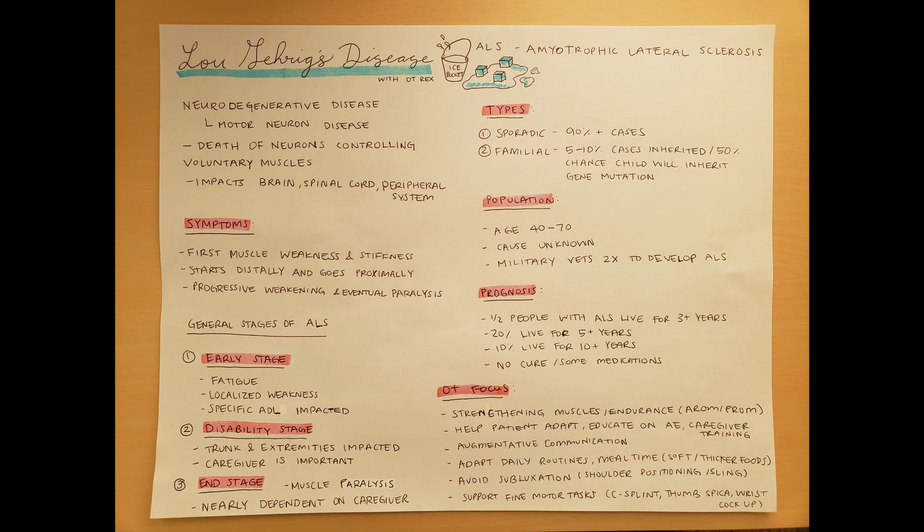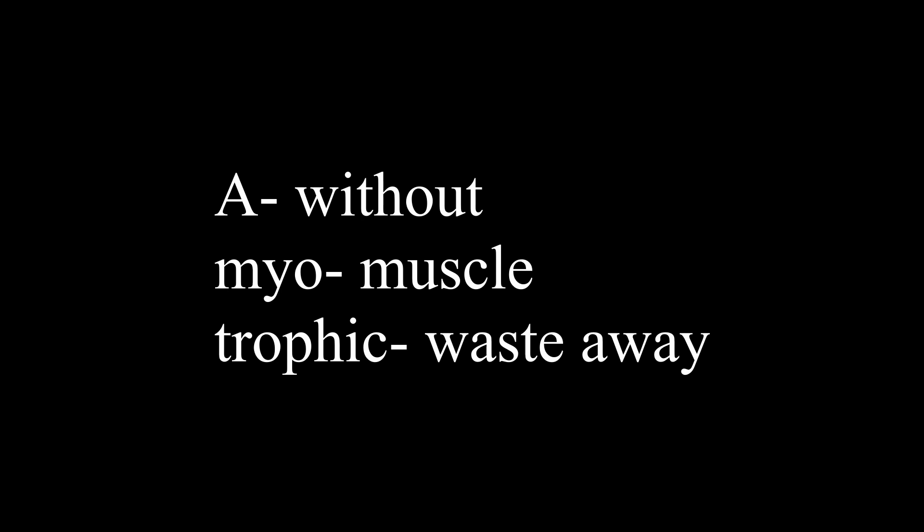Lou Gehrig's disease has multiple names, and one of the other names it's commonly known by is amyotrophic lateral sclerosis, abbreviated as ALS. Let's break down what amyotrophic lateral sclerosis means. Going back to medical terminology: 'A' means without or none, 'myo' refers to muscle, and 'trophic' — think of atrophy — means no muscle nourishment. So amyotrophic means there is no muscle being nourished, which leads to muscle decay.